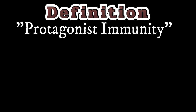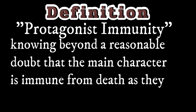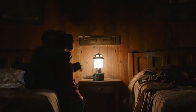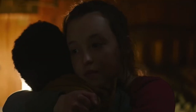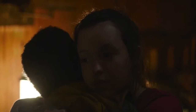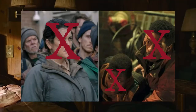Protagonist Immunity: knowing beyond a reasonable doubt that the main character is immune from death, as they are required to advance the story. Back to The Last of Us — it literally couldn't be anyone else between the side characters and main characters. In terms of who was up for debate, we were of course right, as Henry, Sam, and Kathleen died by the end of that episode.